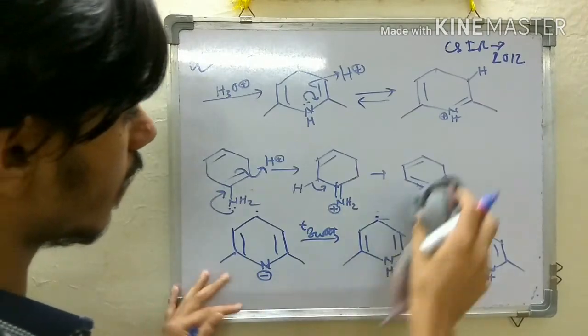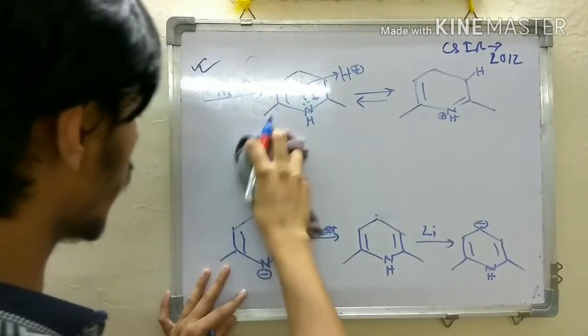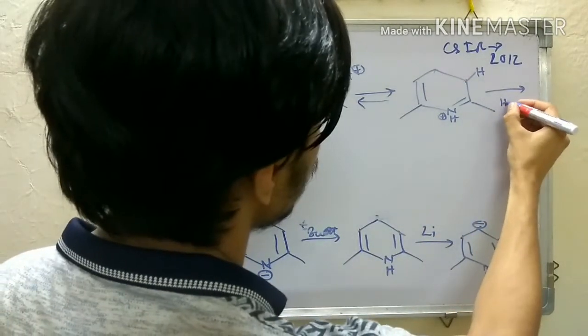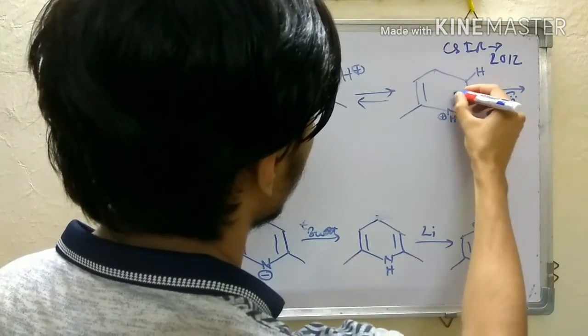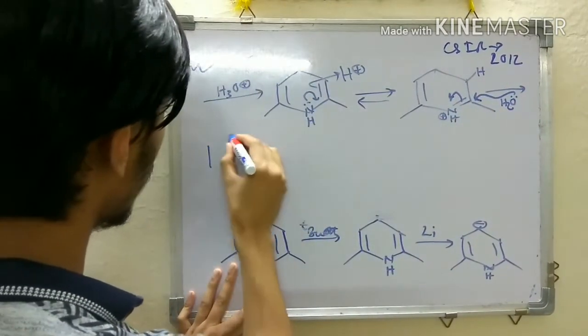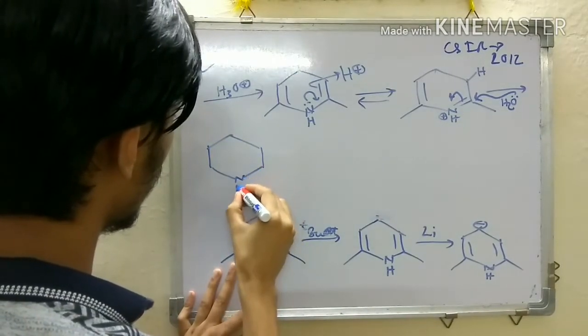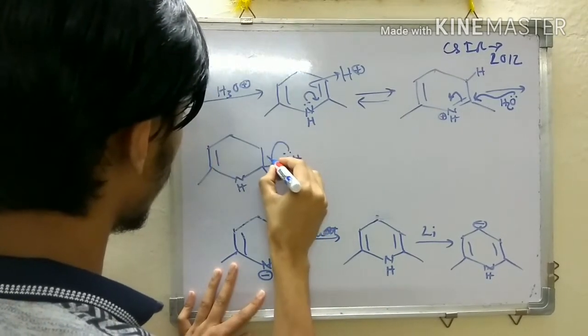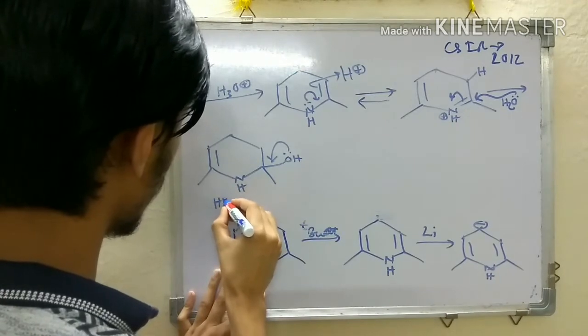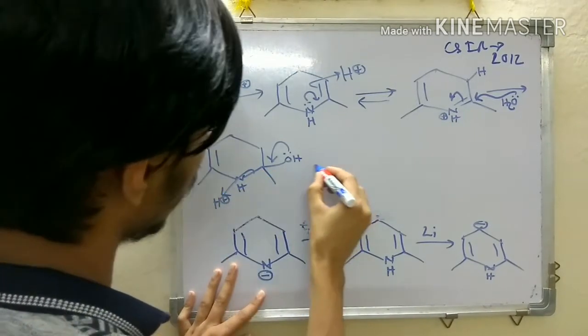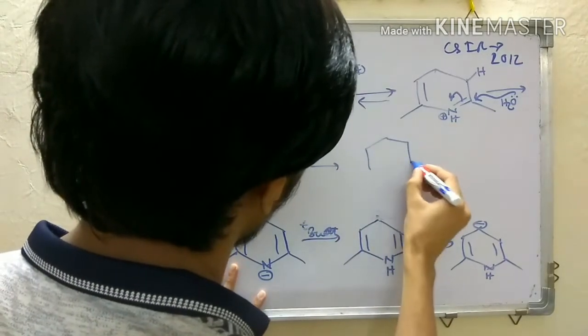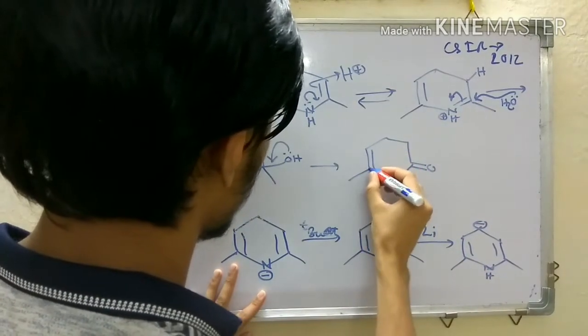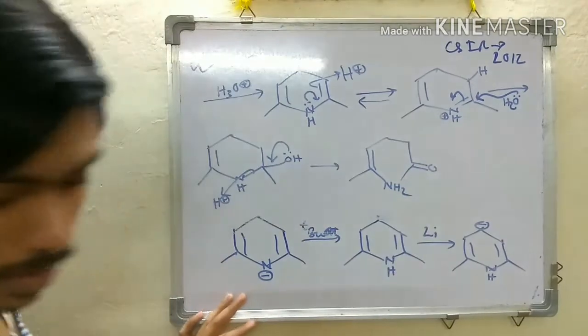What else can happen? You're using aqueous solvent, so your water molecule can attack here. In this way, it adds here. Then you can push electrons, and since there are protons in your solvent, it can go like this, hydrolyzing your pyridine nucleus.